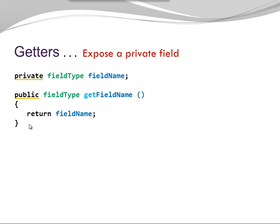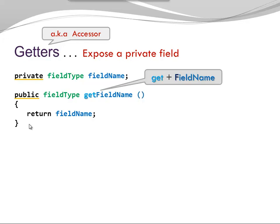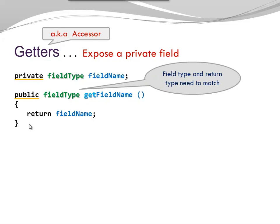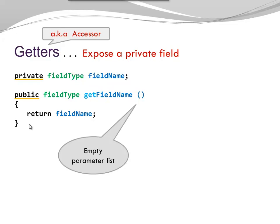Getters expose the value of the private field. They are also known as accessors. It is very common to choose a name for a getter using the prefix 'get' and the field name that it exposes, changing the first letter of the field name to an uppercase letter for camel case notation, like getFieldName. Notice that the return type of my getter and the variable type of my field need to match. Also notice an empty parameter list. No additional information is needed for a getter to return the field because the field is already accessible within the class.